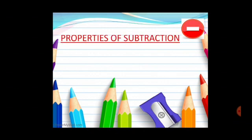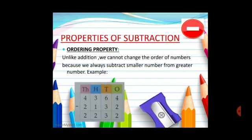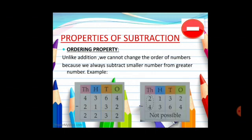Now the properties of subtraction. The first property is ordering property. Unlike addition, we cannot change the order of numbers because we always subtract smaller number from greater number. See the first number, 4364, it is minuend, 2132 subtrahend, and the answer is called difference. The difference is 2232. But if I interchange the position of minuend and subtrahend, then subtraction is not possible because we cannot subtract bigger number from the smaller number.